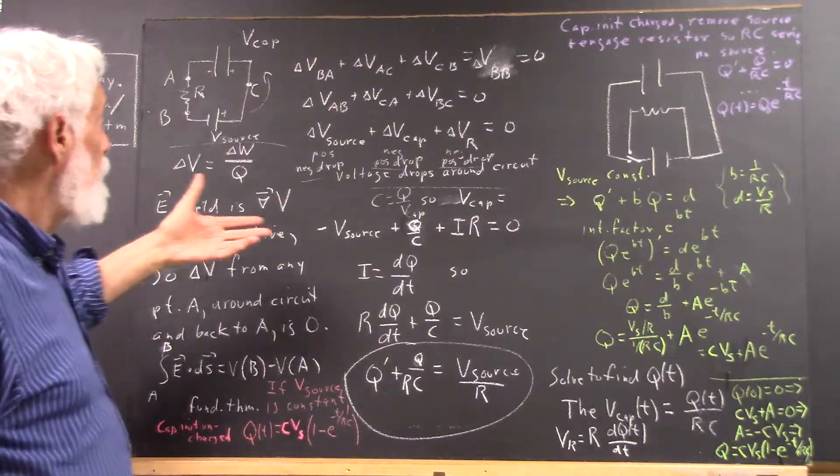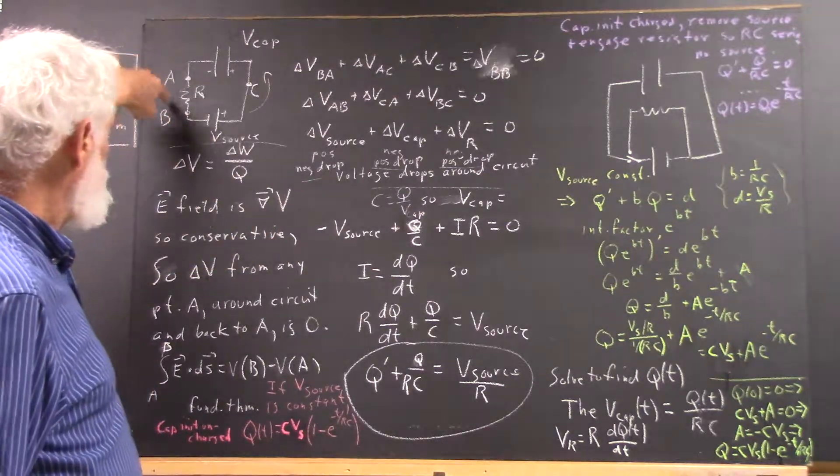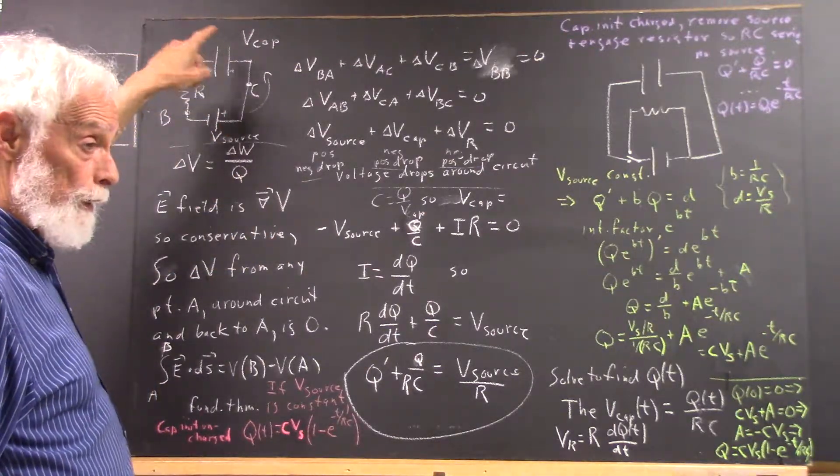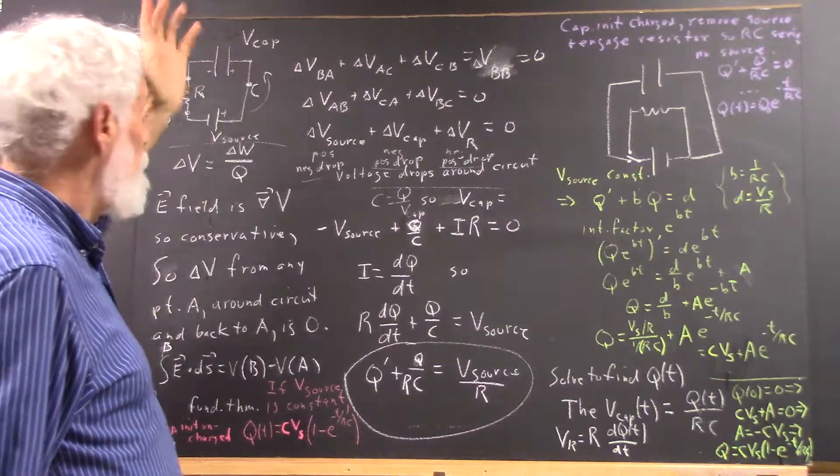And from that, we conclude that if we trace the circuit in any direction, the sum of the voltage drops is zero.